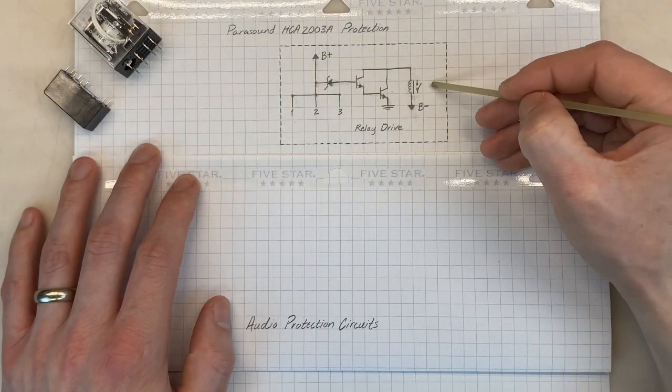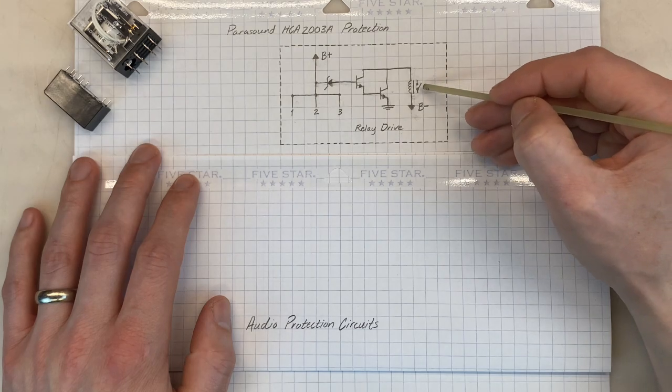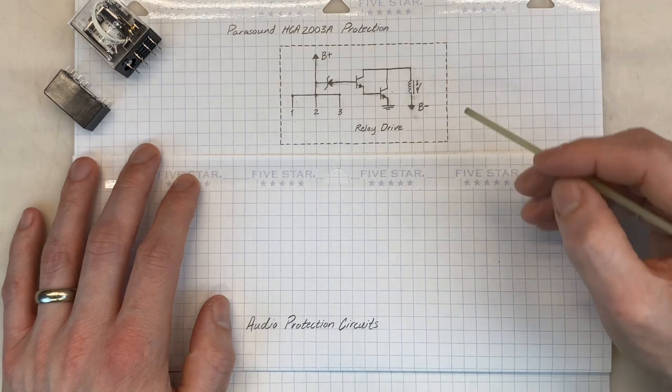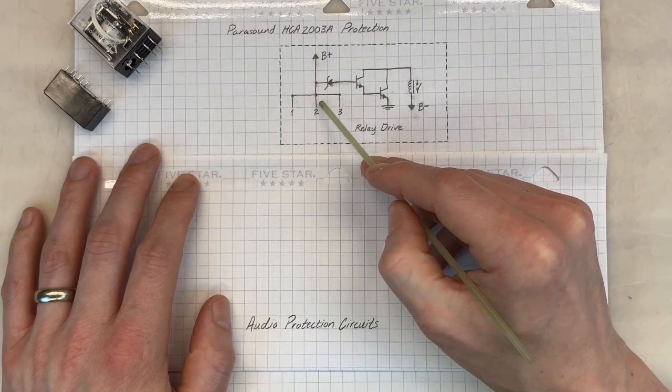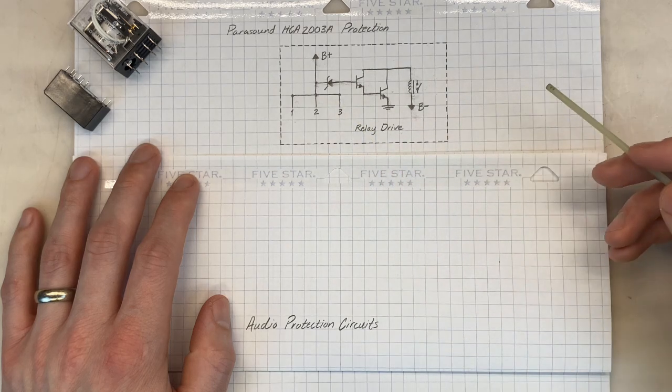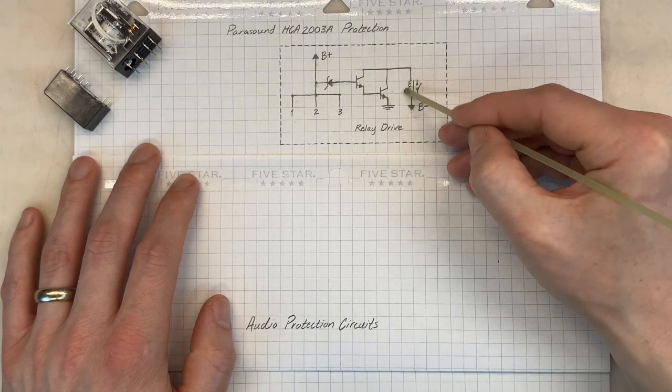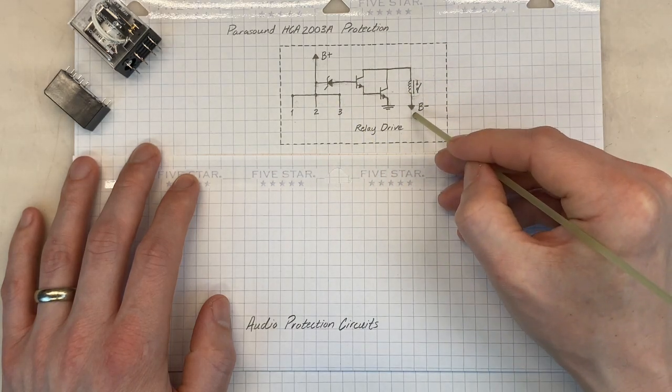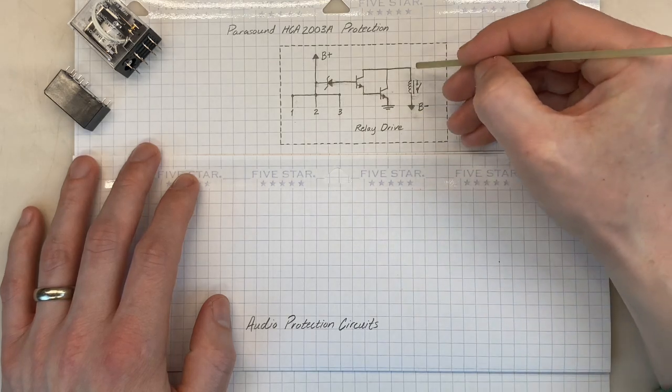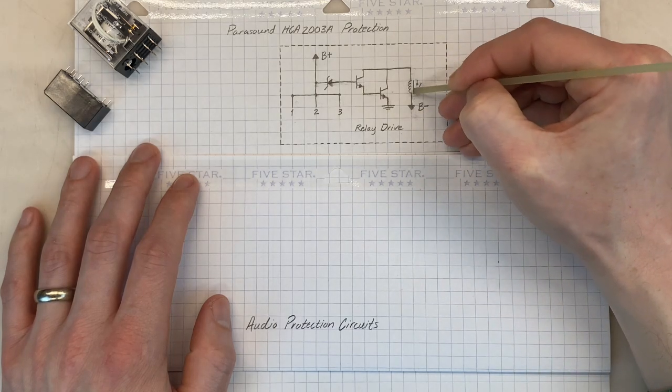We'll start with the relay drive circuit under normal operating conditions, so when the relay is active or engaged. For a moment, ignore these three nodes labeled 1, 2, and 3. We have our relay here with B-, or our negative supply rail, on one side. So on the other side, we need something more positive to turn that relay on.